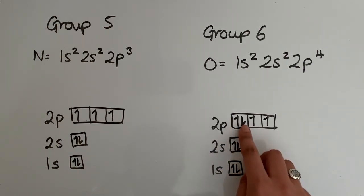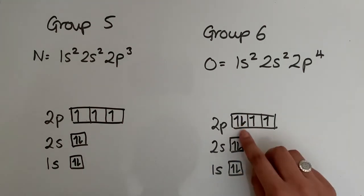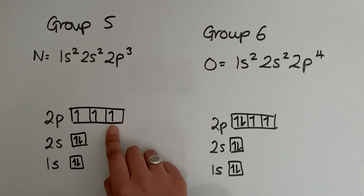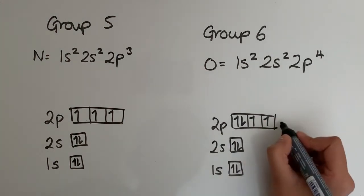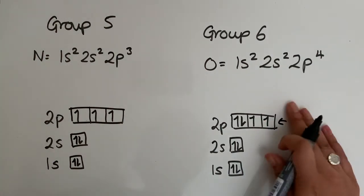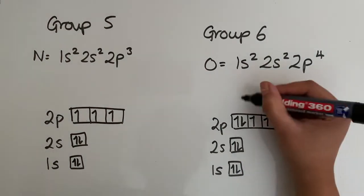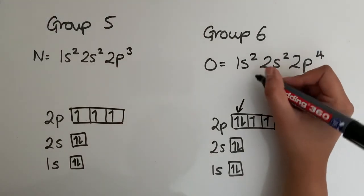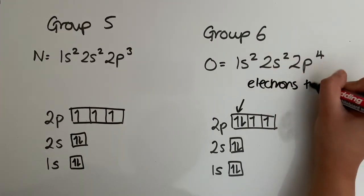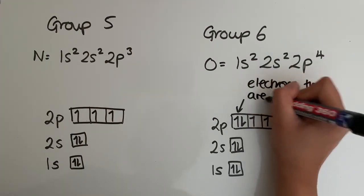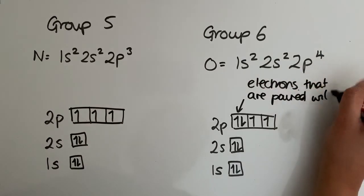Because there is repulsion, this electron here is ready to leave. So that means that this electron here is more readily lost, or it can be more easily ionized compared to the outer electron over here. And that's due to the electron pairing in oxygen. So in this 2p over here, these ones, electrons that are paired will repel each other.